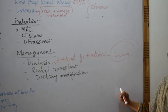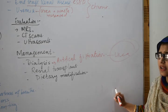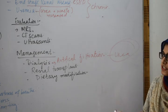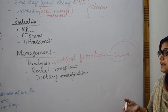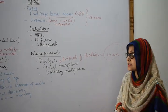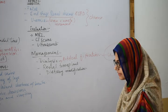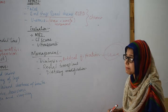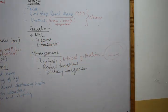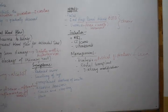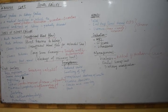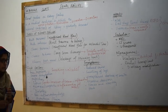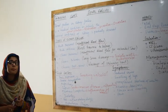Renal transplant involves using a functional donor organ to replace the failed kidney. Renal transplant is better than dialysis because dialysis must be done daily, while a renal transplant can extend your life by about 10 years or more if cared for properly. For prevention, we need to keep diabetes and hypertension under control, maintain normal fluid intake to avoid dehydration, and manage infections and inflammation.